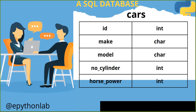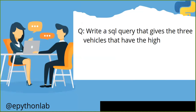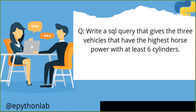You may be asked to retrieve data from this SQL table. The question is: write a SQL query that returns the three vehicles that have the highest horsepower with at least six cylinders.